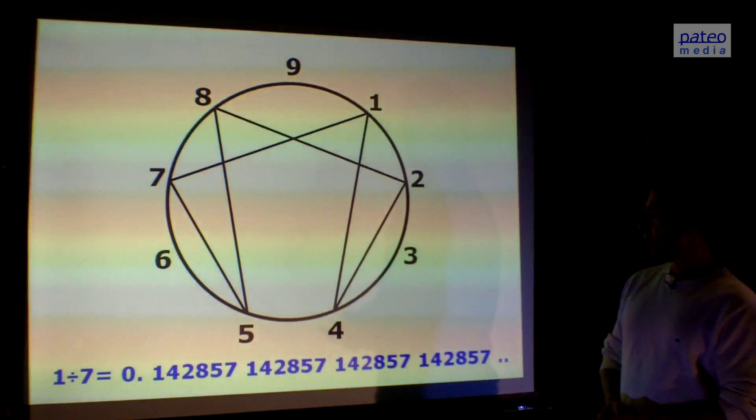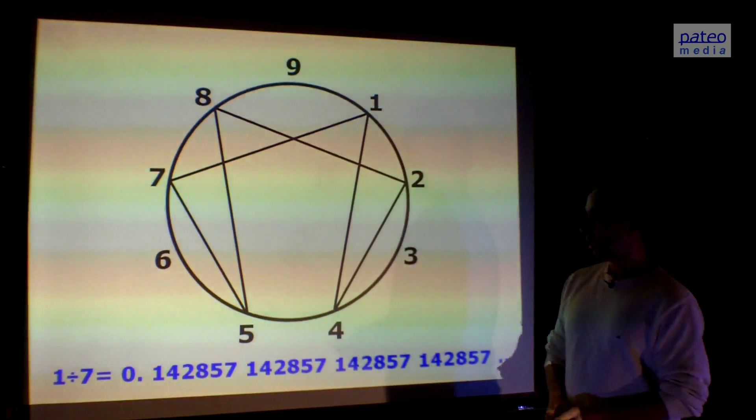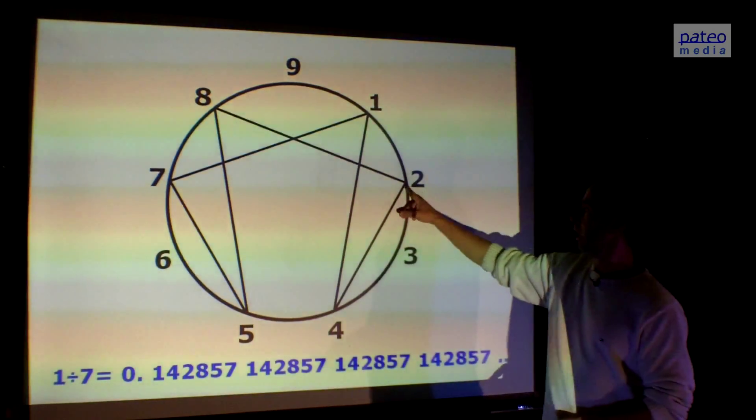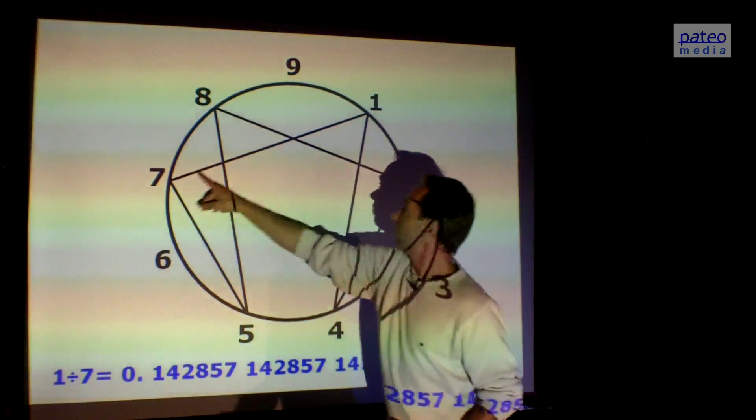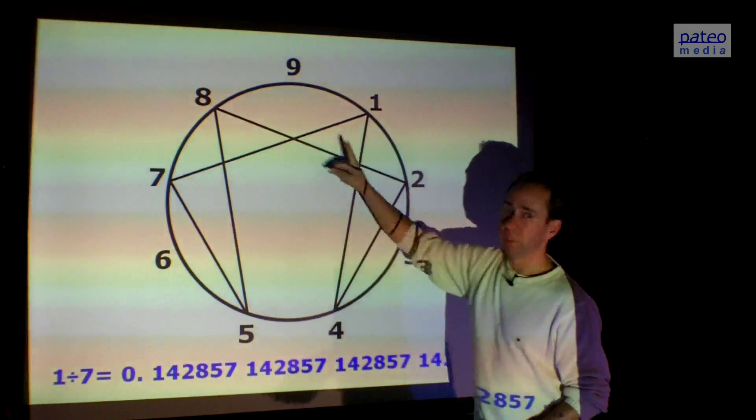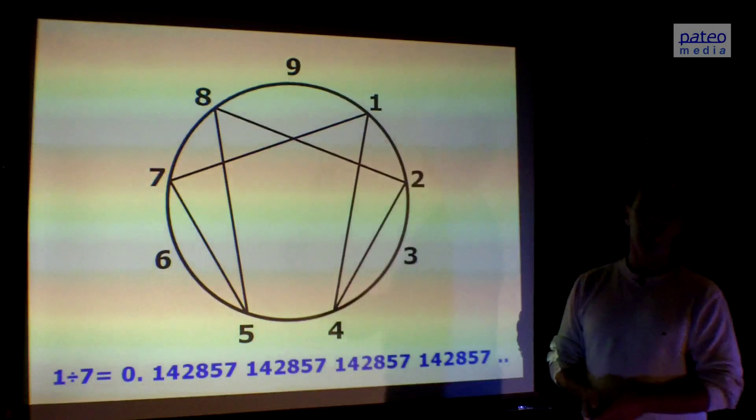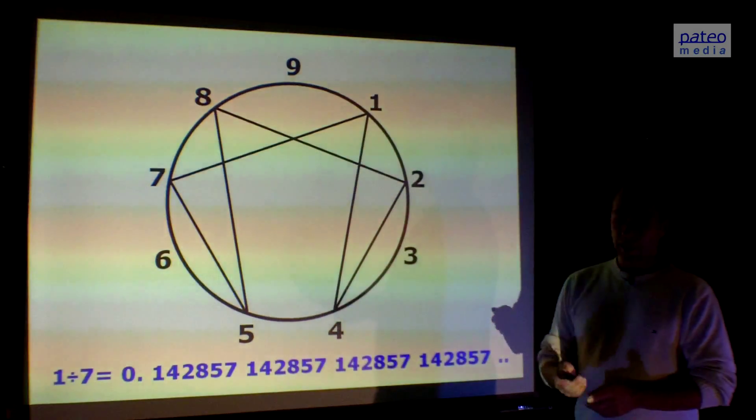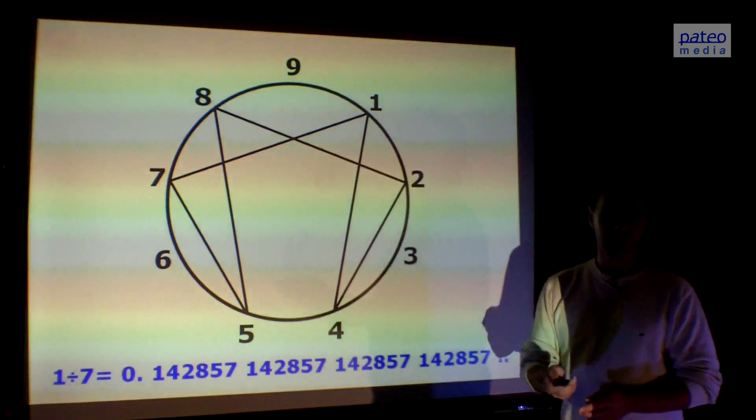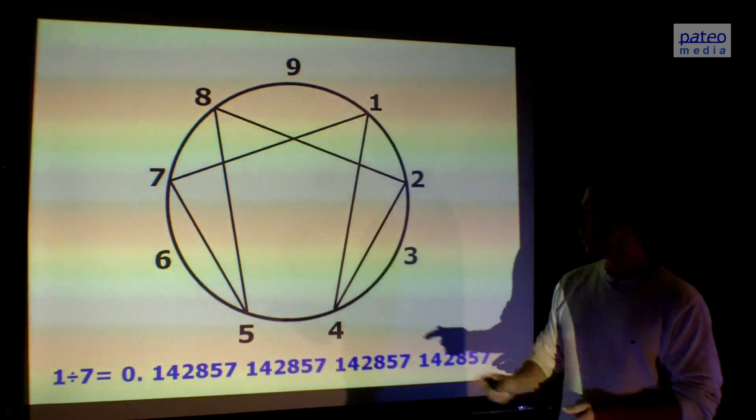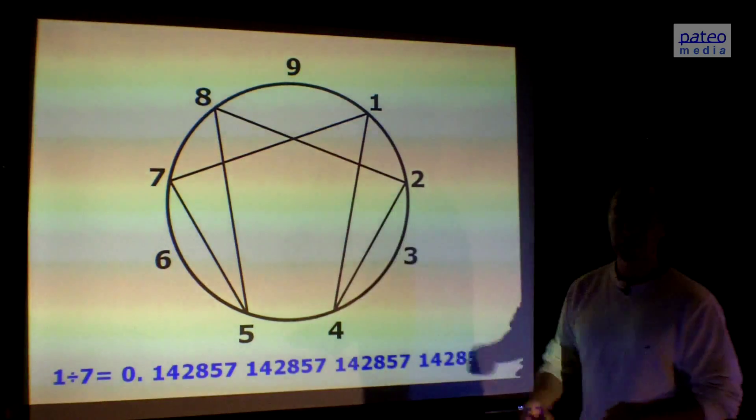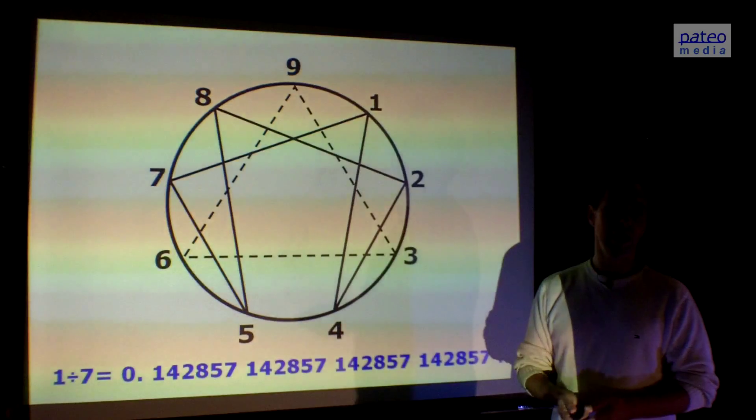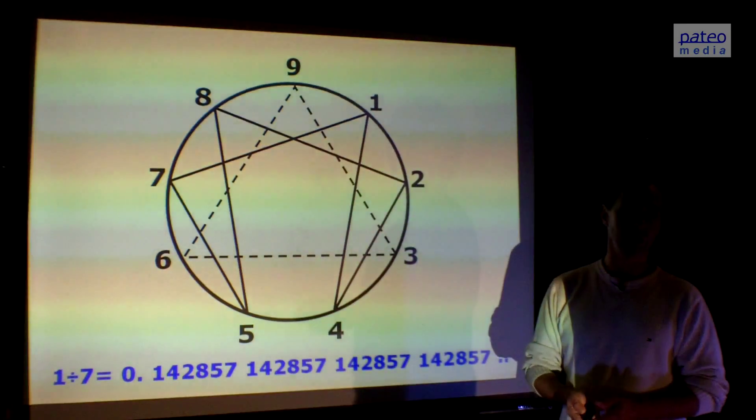If you divide two by seven, it's very simple. Then you just start here, get two, eight, five, seven, one, four, two, and it repeats itself over and over again. Maybe you know this part of the symbol because if you add what happens between three, six, and nine, you get the symbol for the Enneagram, another very important symbol.